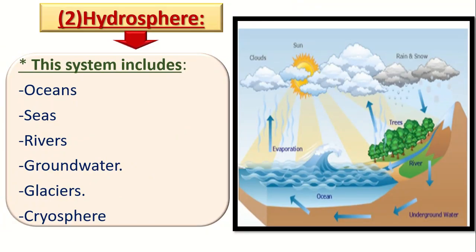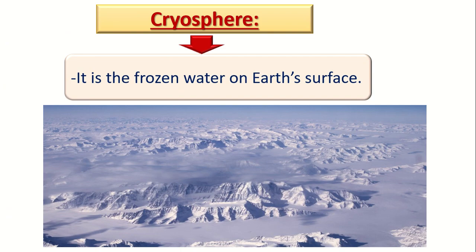In the hydrosphere system there are oceans, seas, rivers, groundwater, glaciers, and the cryosphere. The cryosphere is the frozen water on the Earth's surface — it's called the cryosphere.